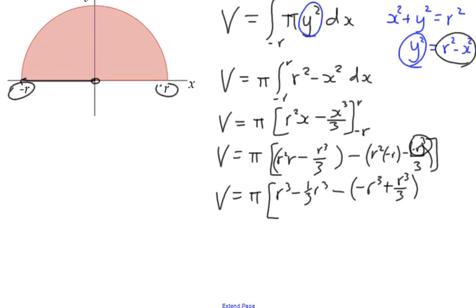If we consider all those together, we've got r³ minus a third r³ plus r³ plus a third... oops, it's going to be minus a third r³, isn't it? Minus a third r³.